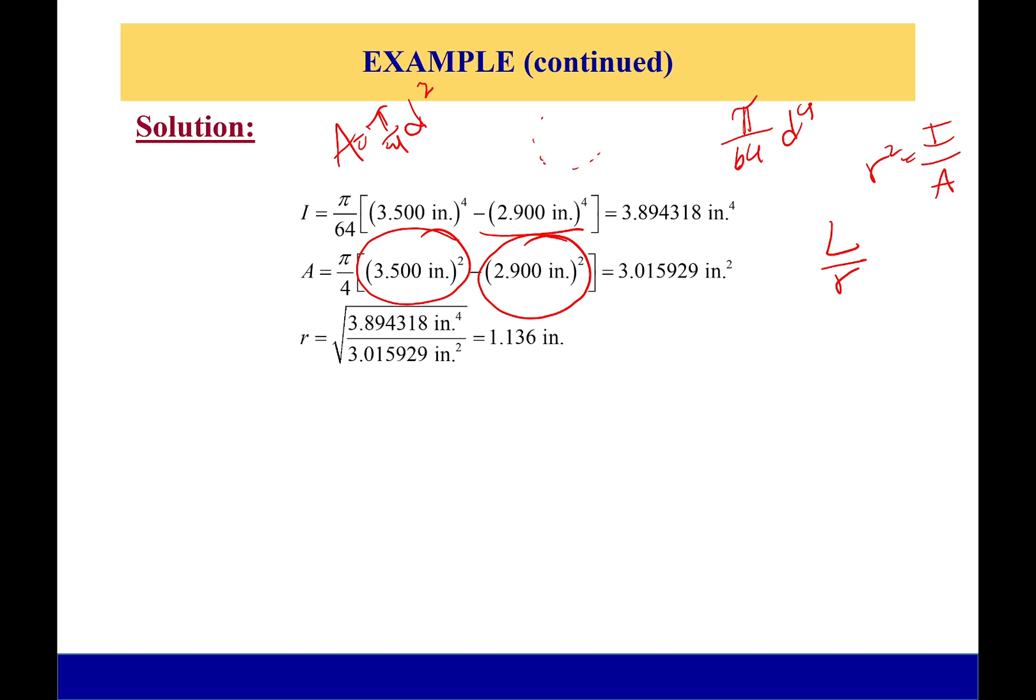Then finally, we can calculate our r for the slenderness ratio. It comes out to be 1.136 inches—that's like an effective radius if you want to give it a term here.